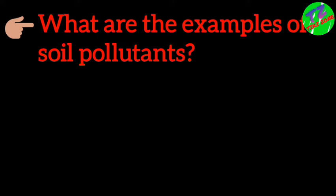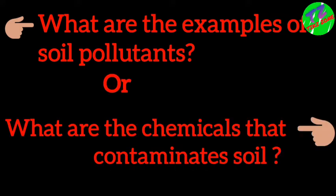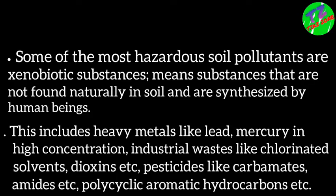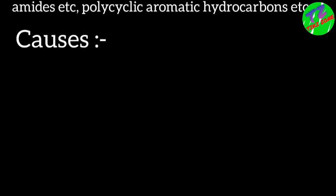Let us discuss what are the examples of soil pollutants — what chemicals contaminate soil. Some of the most hazardous soil pollutants are xenobiotic substances, meaning substances not found naturally in soil and synthesized by human beings. This includes heavy metals like lead and mercury in high concentration, industrial waste like chlorinated solvents and dioxins, pesticides like carbamates, and polycyclic aromatic hydrocarbons, etc.